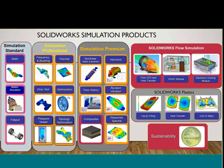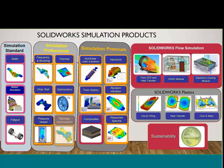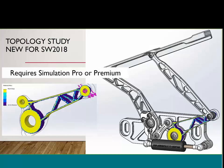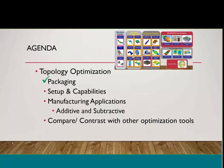Because topology optimization is mesh-based, your results will look more organic than traditionally designed parts. The topology study is packaged inside of Simulation Professional — so to use it, you'll need to check out a license of Simulation Professional or Simulation Premium. It is brand new to 2018. There is no standalone version, so you can't take this back to a previous version of simulation. You will have to use 2018 in order to use this functionality, but it's really neat and I highly recommend you check it out.